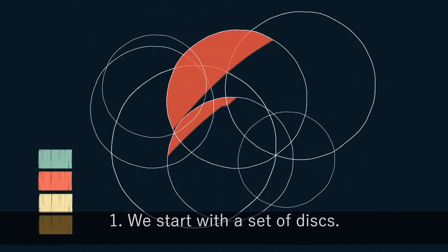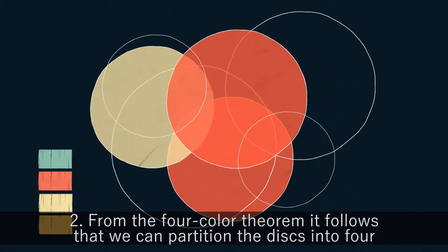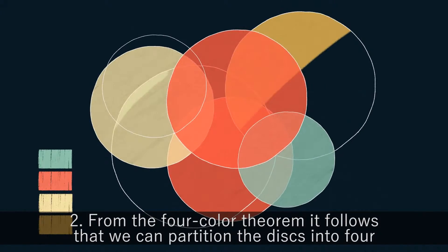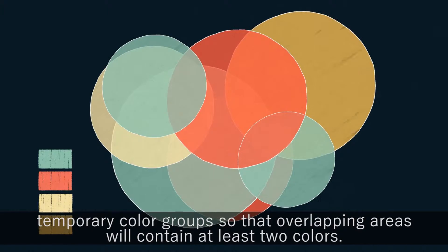One, we start with a set of disks. Two, from the four-color theorem, it follows that we can partition the disks into four temporary color groups, so that overlapping areas will contain at least two colors.